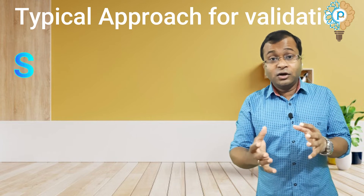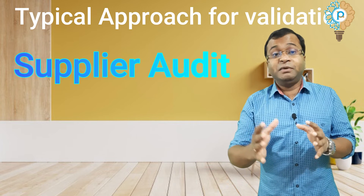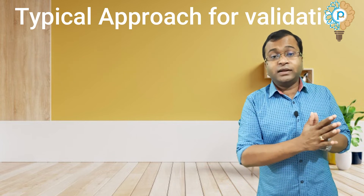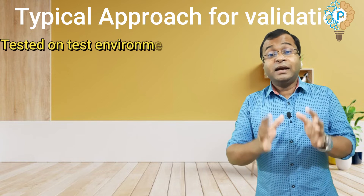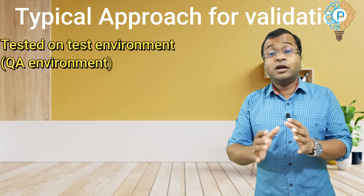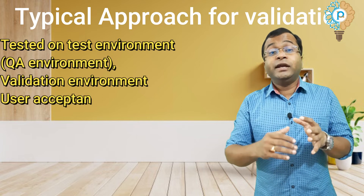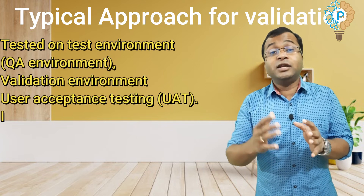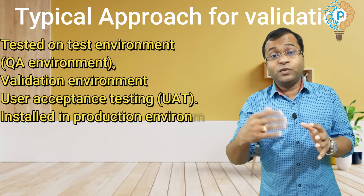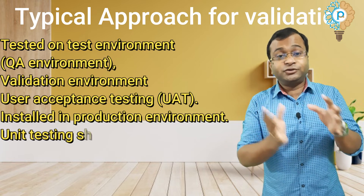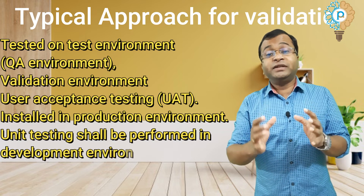For Category 5, a supplier audit must be performed as part of the supplier risk assessment. Category 4 and Category 5 software shall be tested in a test environment such as a QA environment, followed by the validation environment — that is, User Acceptance Testing (UAT). After successful UAT, the software must be installed in the production environment. For Category 5 software, unit testing shall also be performed in the development environment.